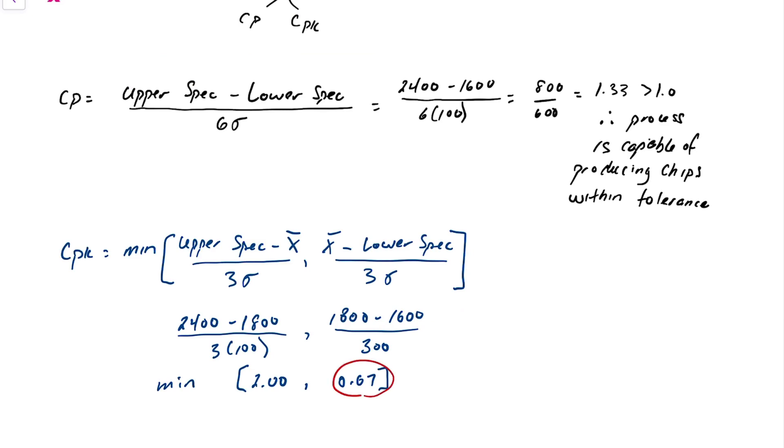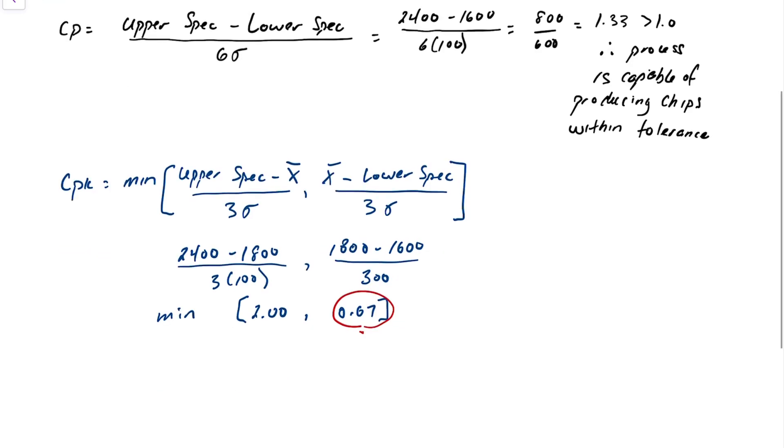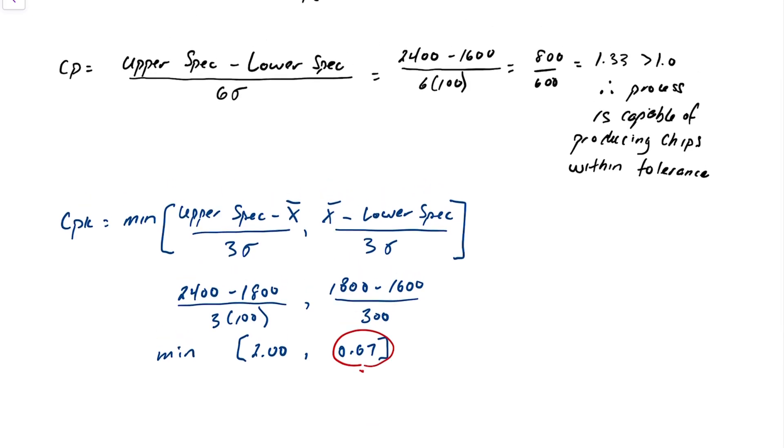Now what this tells us is that the production of DRAM chips is favoring the lower specification. So let's start for a second assuming that we had a perfectly capable process.